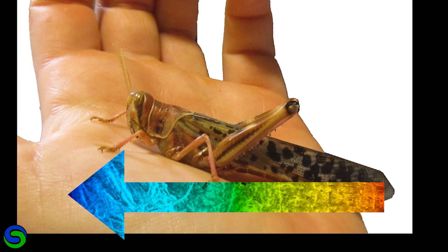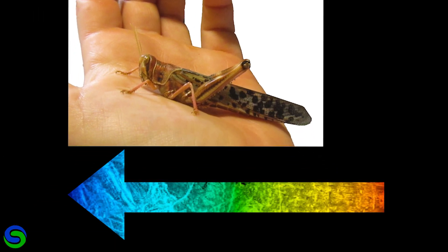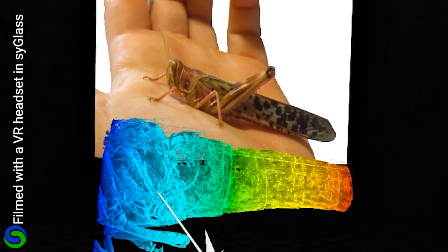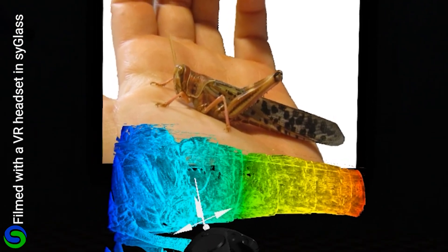First, looking at that locust from the abdomen to the thorax, scan slices are colored from red to blue. Here is where the tympanum ear is located. You can see the blue is not as dark.